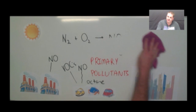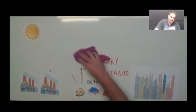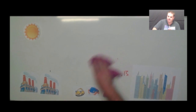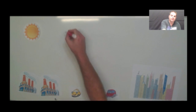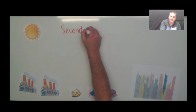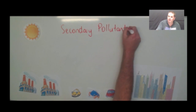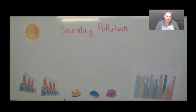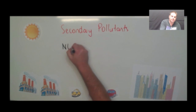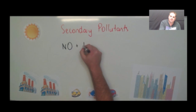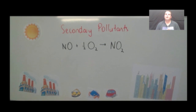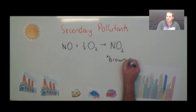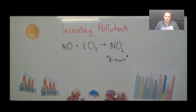Now what happens is that in the atmosphere, you can get further reactions occurring. These further reactions produce new chemicals — what we call secondary pollutants. Secondary pollutants are those that are formed by reactions in the atmosphere. So our nitrogen monoxide is up there, we've got oxygen in the atmosphere as well, and it reacts with one of the oxygens from an oxygen molecule to form nitrogen dioxide. This is a really unique gas — it's the only one which is actually brown.